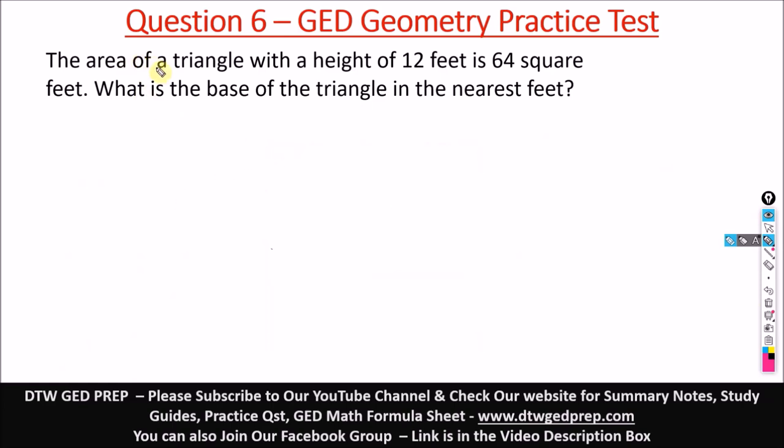Question 6 says the area of a triangle with a height of 12 feet is 64 square feet. What is the base of the triangle to the nearest feet? The formula for the area of a triangle is half base times height.